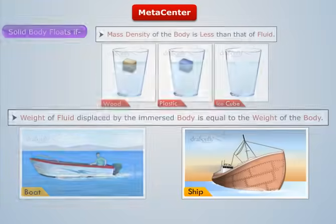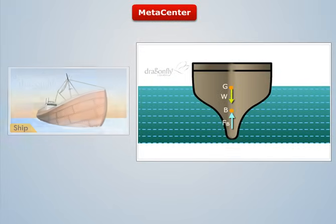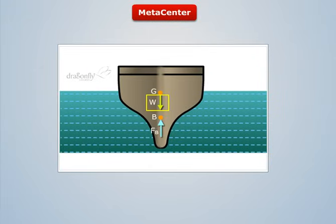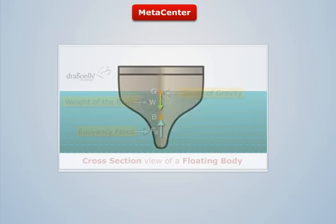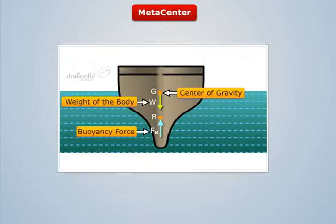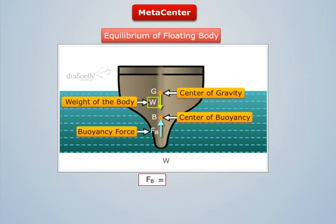When a body, say a ship, floats in water, it is acted upon by two forces: a vertical downward force of gravity which is equivalent to the weight of the body, W, acting at the center of gravity, G; and an upward vertical buoyancy force, FB, which is equal to the weight of the water displaced by the immersed body, passing through the centroid of the displaced volume of water, that is, the center of buoyancy.